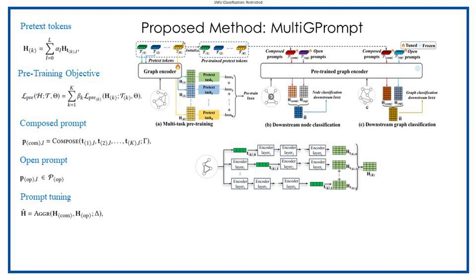Secondly, we propose a dual prompt mechanism with a set of composed prompts and a set of open prompts. Composed prompts aim at transferring pretext task-specific knowledge to downstream tasks through a learnable mixture of pretext tokens. Simultaneously, open prompts facilitate the transfer of global inter-task knowledge. Lastly, we generate a final embedding matrix which incorporates the output embeddings from both the composed and open prompts to compute the downstream task loss.